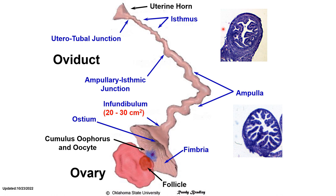After the isthmus, we have the utero-tubal junction, which is the transition between the uterus and the oviduct. In cross-section, the oviduct has three layers: the serosa, the muscularis, and the mucosa. To summarize, from the ovary, the parts are the infundibulum, the ampulla, the ampullary-isthmic junction, the isthmus, and the utero-tubal junction. The major site of fertilization is the ampullary-isthmic junction.